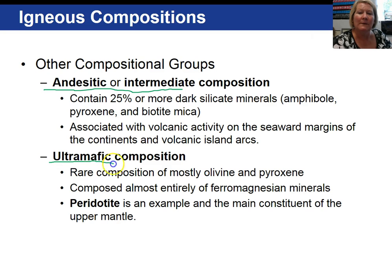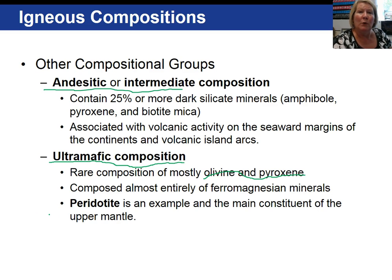Our last magma composition is ultramafic. Ultramafic is composed entirely of ferromagnesian minerals, primarily olivine with a little bit of pyroxene. The igneous rock called peridotite, which we introduced in chapter 2 on plate tectonics, makes up the upper mantle and is an example of an ultramafic composition igneous rock. These are the highest temperature, lowest silica content igneous rocks.